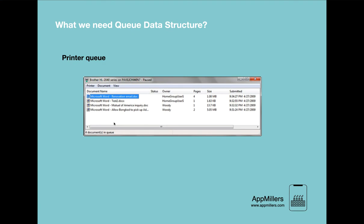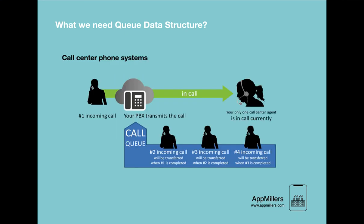Another application of the queue data structure is a call center. When a new call comes in, it stays in the queue until a call center agent becomes available, then that call is served, then the next, and so on. Others stay in the queue until the agent finishes their previous call. With this we have completed this lecture. We learned what the queue data structure is and why we need it. In the next lecture, let's see standard queue operations.